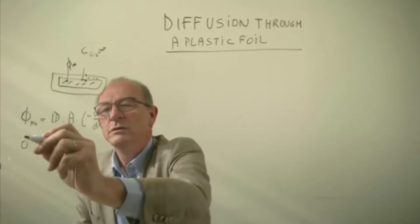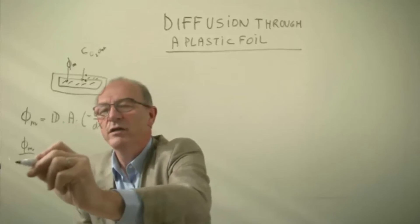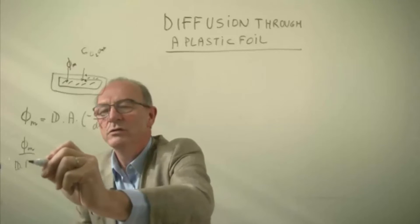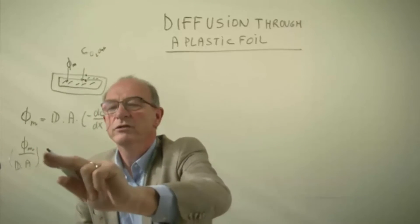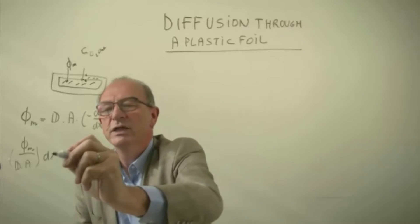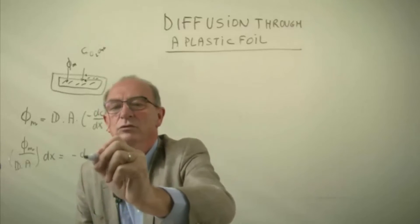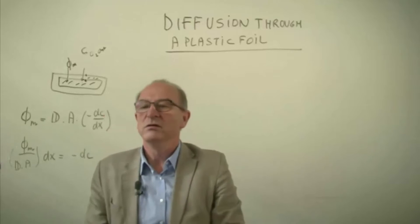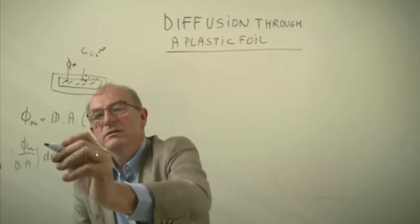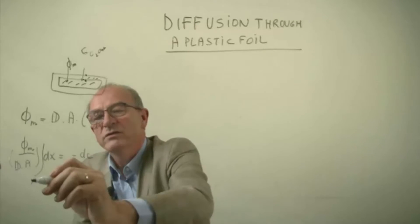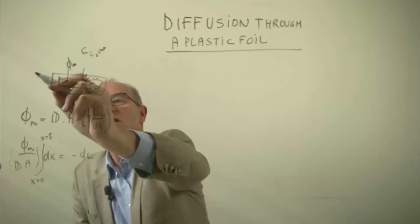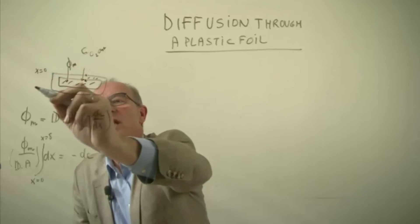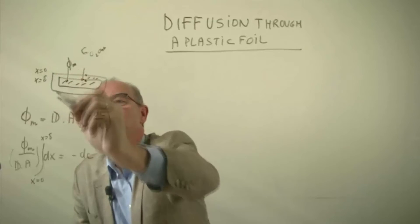Well let's do this. That's phi_m divided by the diffusion coefficient divided by the surface area multiplied by dx is equal to minus dc. Well let's integrate this from x is 0 to x is delta, in which x is 0 is at the outside and x is delta is at the inside.